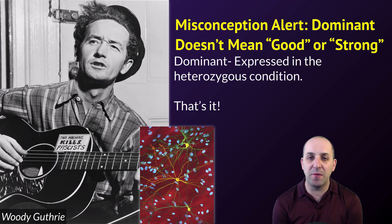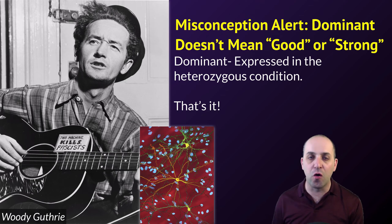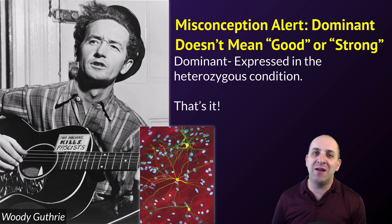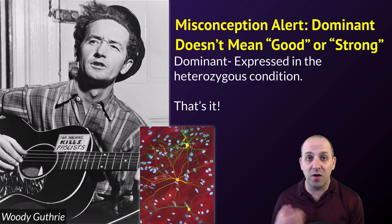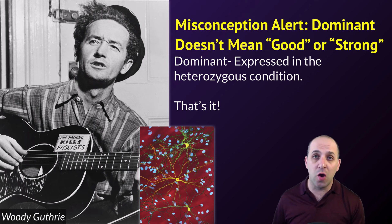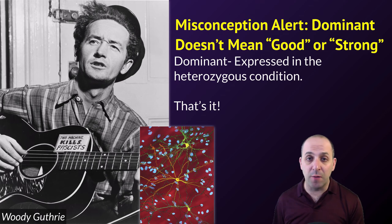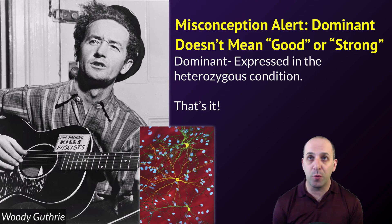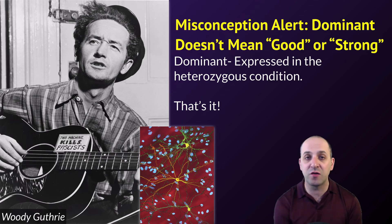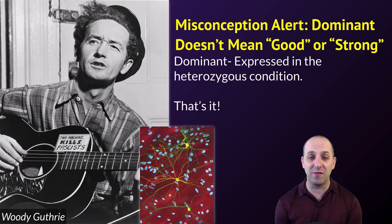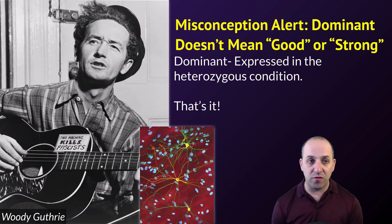Let's pause and address a misconception: dominant, in the way we use it in Mendelian genetics, does not mean the best, strong, or even good. Dominant only means that in the heterozygous organism — the one that has one copy of each — it's going to control the phenotype. Purple is dominant not because purple plants are better than white plants, but because when you have a purple allele and a white allele, you show purple. For example, Huntington's chorea is a terrible disease and it's dominant — you only need one copy of the allele to get that disease, and it destroys cells in your nervous tissue.